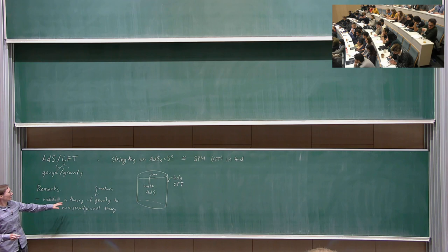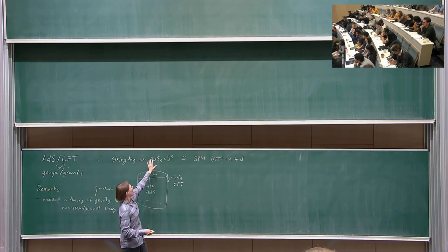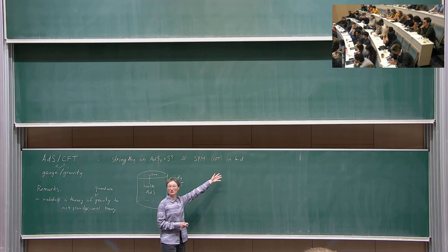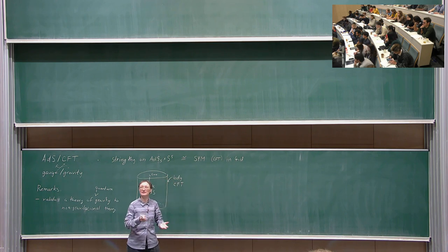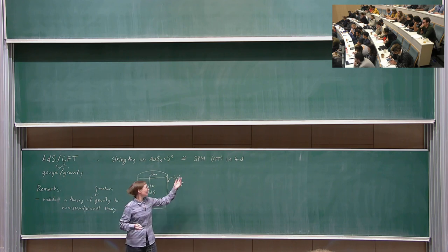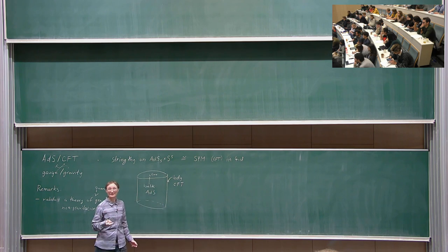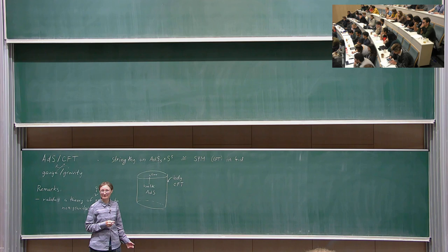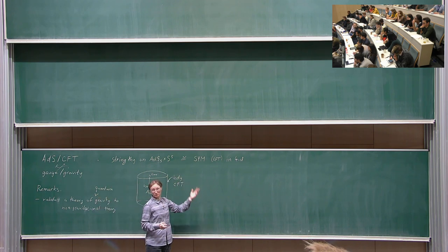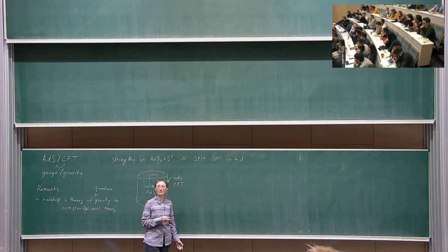One hopes to use this correspondence to answer long-standing questions of quantum gravity by recasting them in the non-gravitational language, where the puzzles associated with gravity are rephrased and hopefully simpler to answer, then translated back. To do that, you need to understand the dictionary between the two sides sufficiently well. Over two and a half decades since the formulation, people have been developing the dictionary in explicit detail, but we're still very far from answering the really interesting questions.